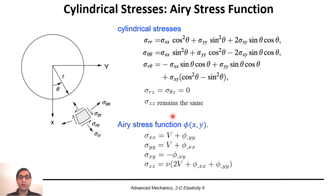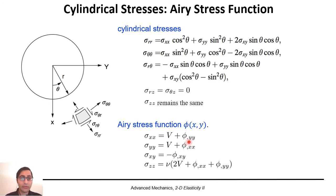We also know that from the Airy stress function phi, we can write sigma_xx, sigma_yy, sigma_xy, and also sigma_zz as a function of partial derivatives of phi. So basically, from the Airy stress function we can find the stress tensor in Cartesian coordinates x, y, z.